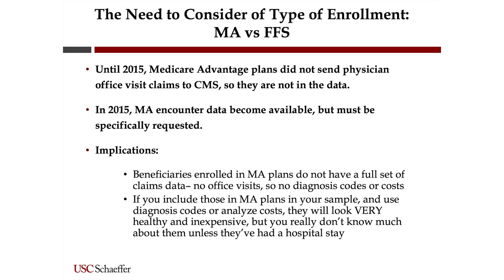You need to be careful when looking at Medicare claims because it matters whether beneficiaries are enrolled in Medicare Advantage or fee-for-service. Up until 2015, Medicare Advantage plans didn't send any physician office visit data — there was none. If you're trying to determine how healthy someone is by looking at diagnosis codes, people in Medicare Advantage look extremely healthy because they have no claims. But the reason they have no claims is because those claims weren't provided — so they're not zeros, they're actually missing values.